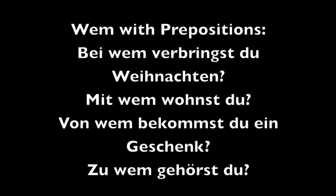Wem can also be used with dative prepositions, though sometimes they don't make sense with people. For instance, 'aus wem' wouldn't make sense in many sentences — it would mean 'out of whom,' like an alien jumping out of somebody's stomach. Examples that do work: Bei wem verbringst du Weihnachten (with whom are you spending Christmas?), Mit wem wohnst du (with whom do you live?), Von wem bekommst du ein Geschenk (from whom are you receiving a gift?), Zu wem gehörst du (to whom do you belong?) — you might use this when talking to a lost child.